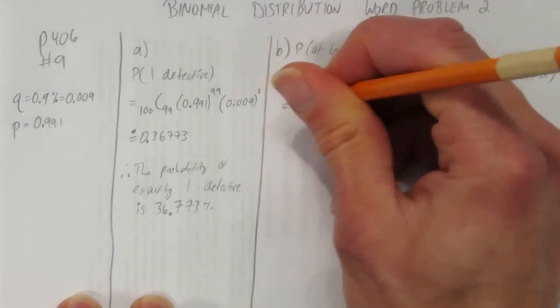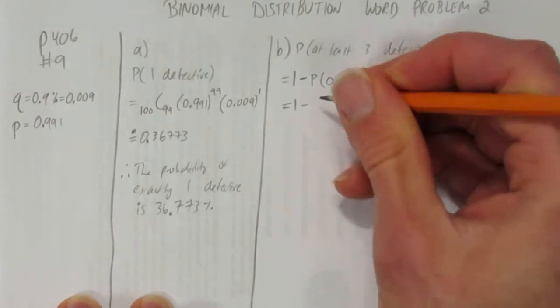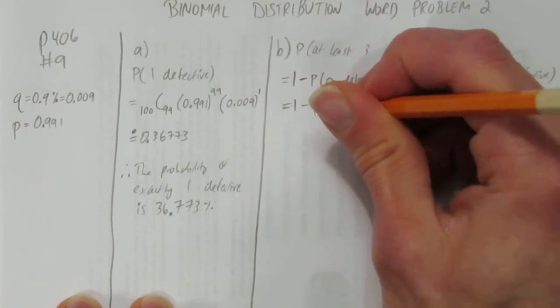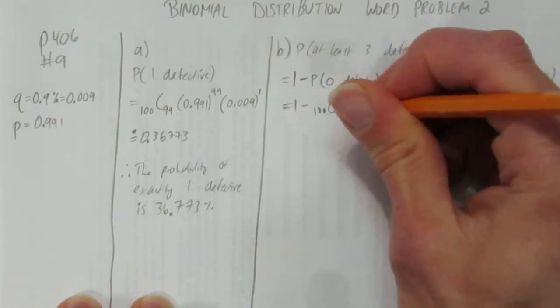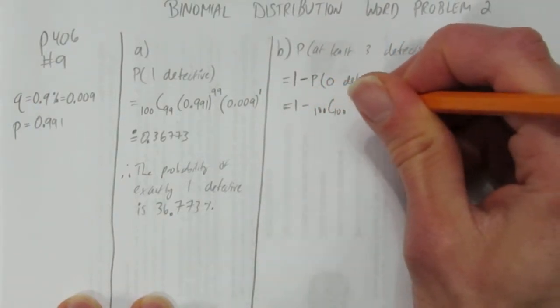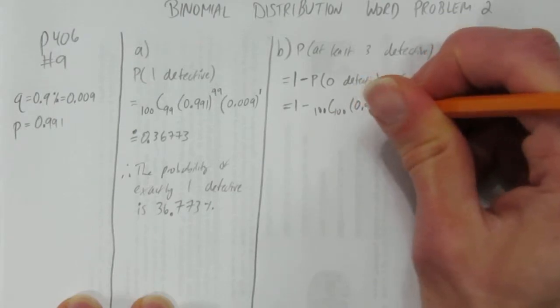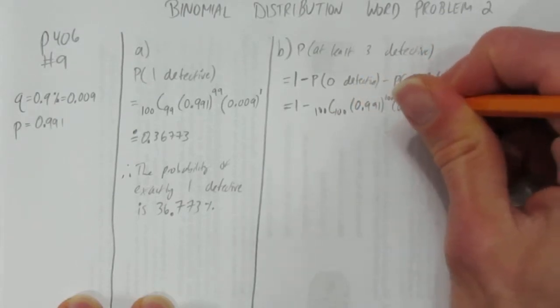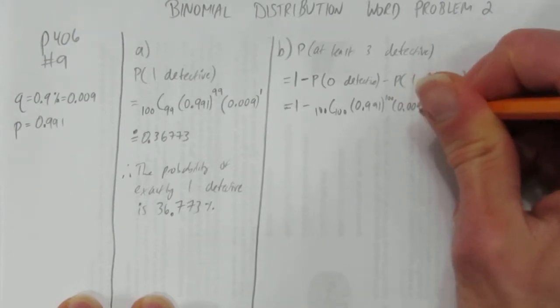So this is just going to be 1 minus the probability of having 0 defective. Well, just like we set up for the first one, you have 100 chips, choose all 100 to be successful, so you get 0.991 to the power of 100, and 0.009 to the power of 0.